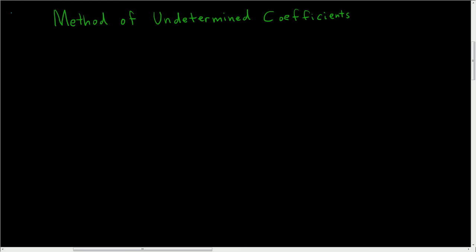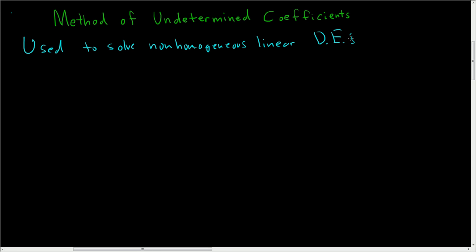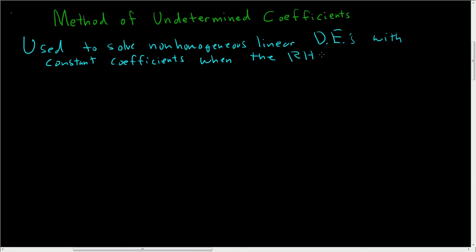I just wanted to make a quick video on the method of undetermined coefficients. So what is this and when do you use it? This is used to solve non-homogeneous linear differential equations with constant coefficients. The right-hand side — RHS means right-hand side — is one of the following.